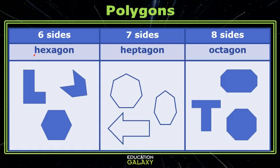A polygon with six sides is called a hexagon. I remember that the x in six and the x in hex go together. A polygon with seven sides is called a heptagon and a polygon with eight sides is called an octagon.